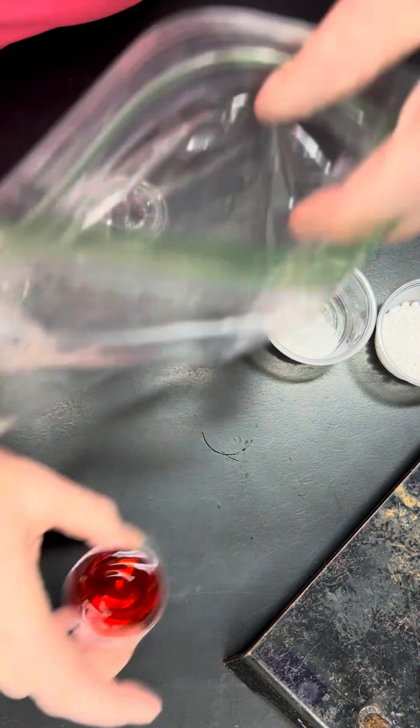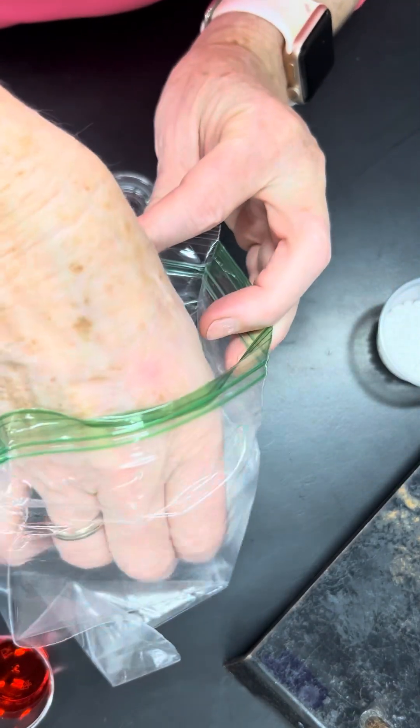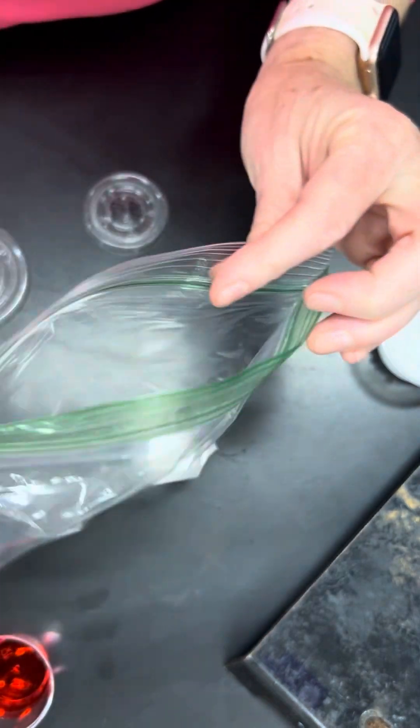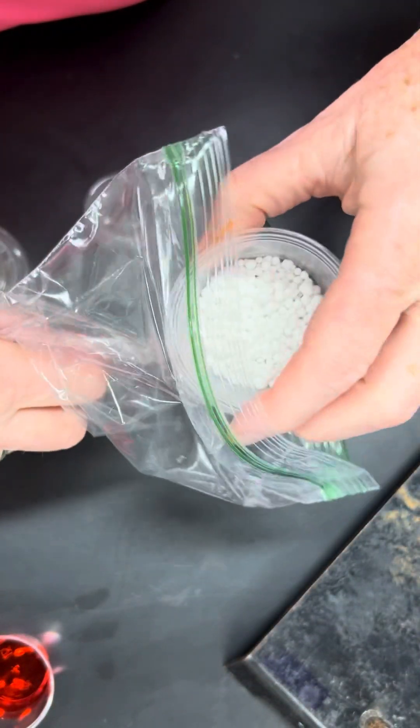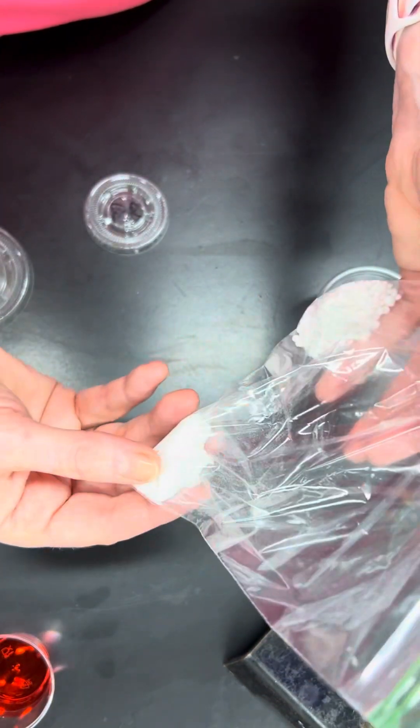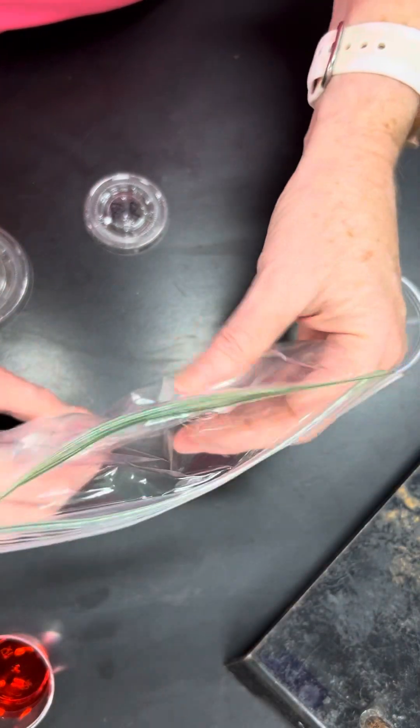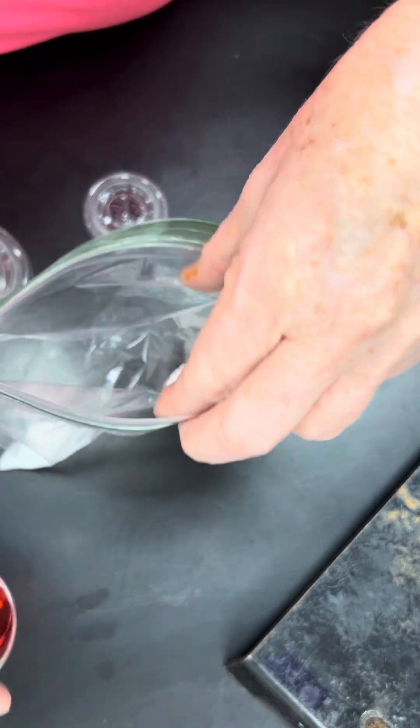And then for this experiment, one powder or white substance will be put into one corner of this bag. The other solid will be put into the other corner of the bag. So this is one teaspoon of sodium bicarbonate, two teaspoons of calcium chloride.